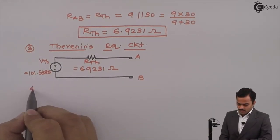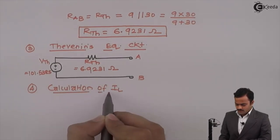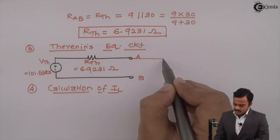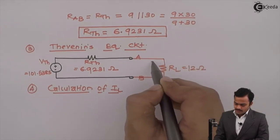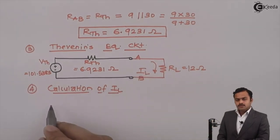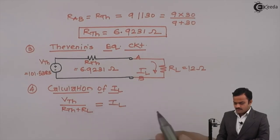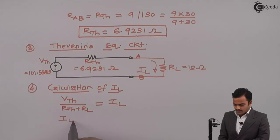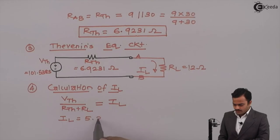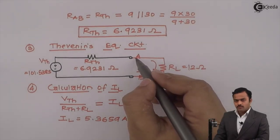Fourth step calculation of IL. For that we need to connect RL back into the circuit which we have removed for calculation of VTH and RTH. RL is 12 ohm and current flowing through RL is IL. If I solve it I will get VTH divided by RTH plus RL equal to IL. If I substitute all the values of VTH, RTH and RL I will get IL as 5.3659 ampere. A positive answer that means current will flow from A to B.